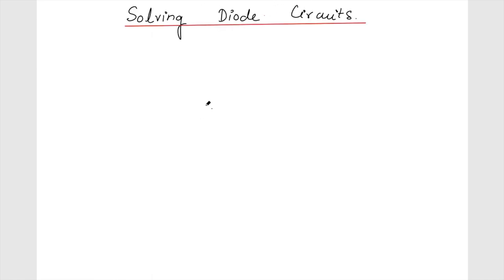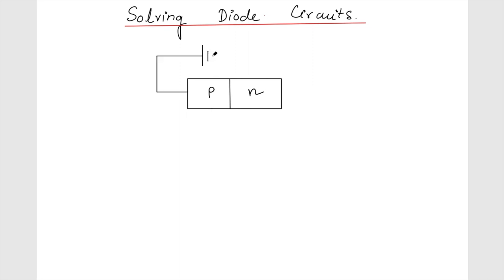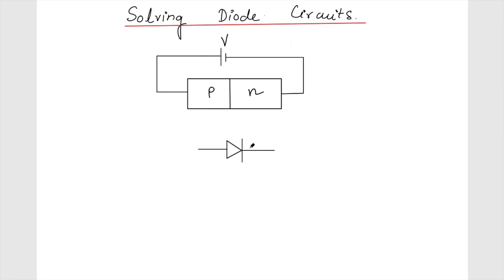We have seen the PN junction, which is called a diode, and now we will see how to solve circuits using a PN junction. This is my PN junction diode with a potential V applied. If V is positive, the configuration is in the forward bias region, and when V is negative, it is in the reverse bias region. The symbol for representing the PN junction diode is this one.